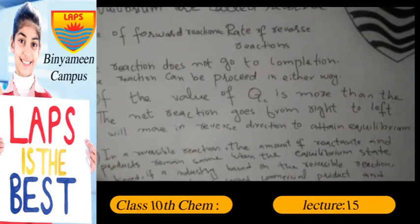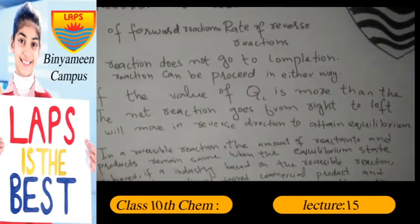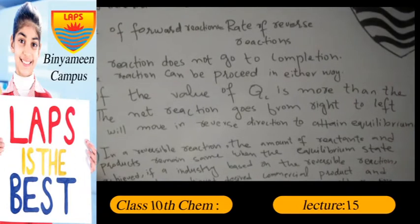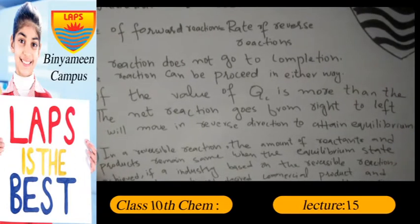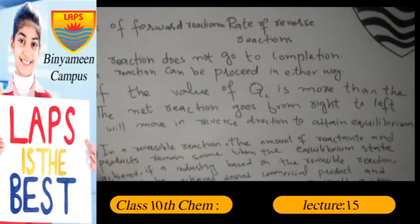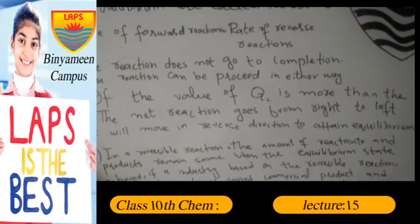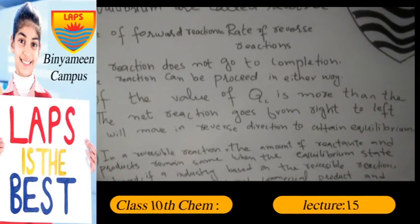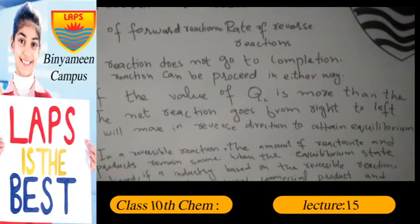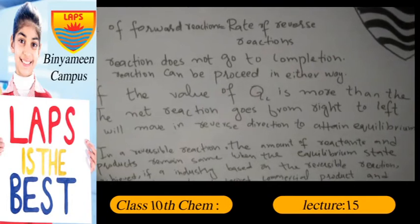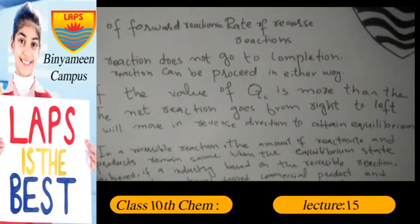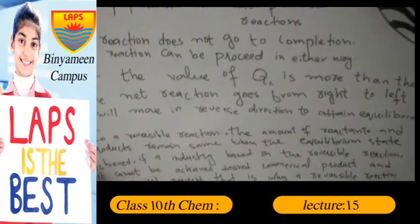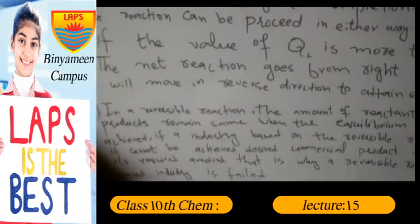Next question: if the value of QC is more than KC, the net reaction goes from right to left — that is, it will move in the reverse direction in order to attain equilibrium.